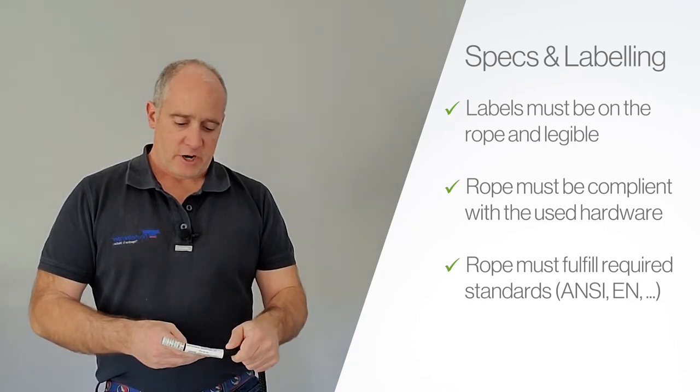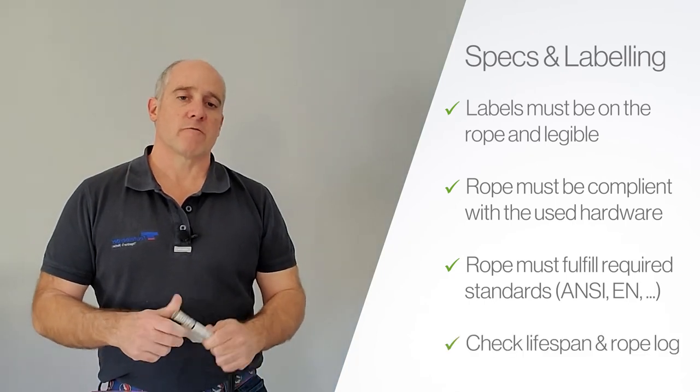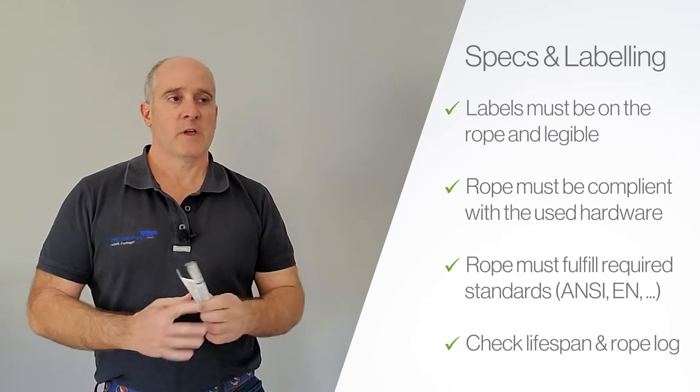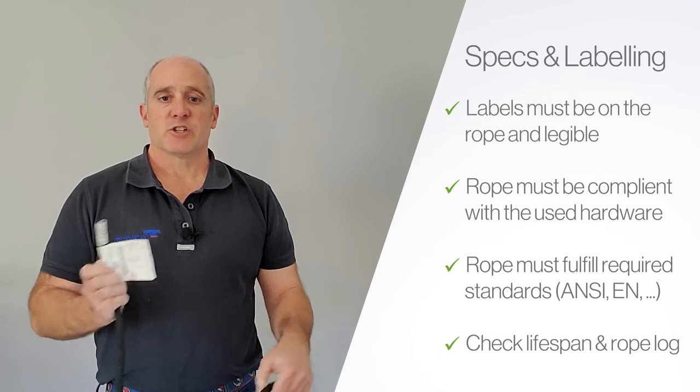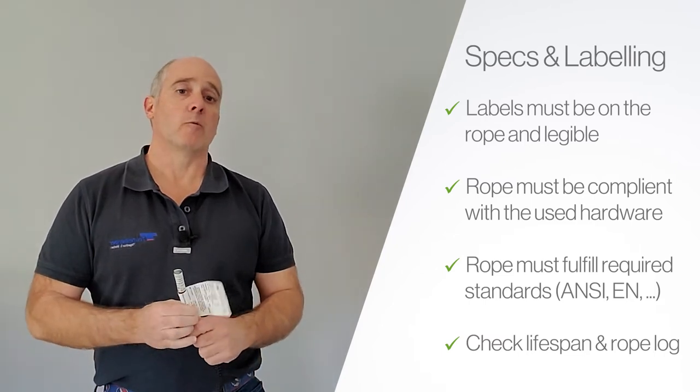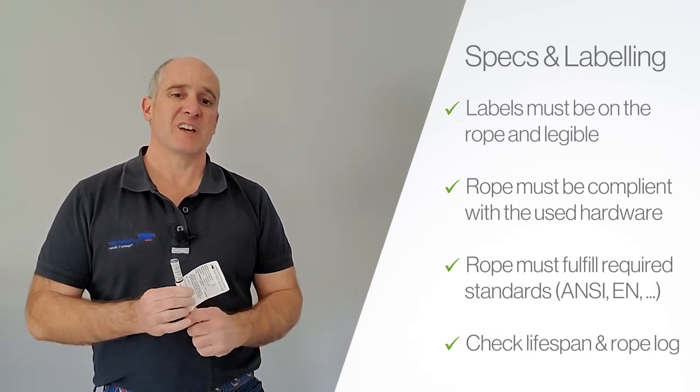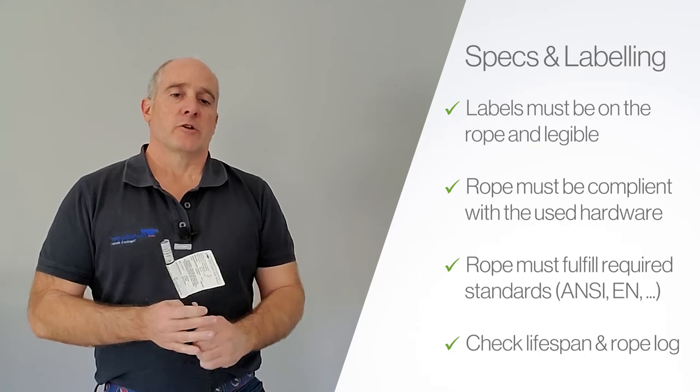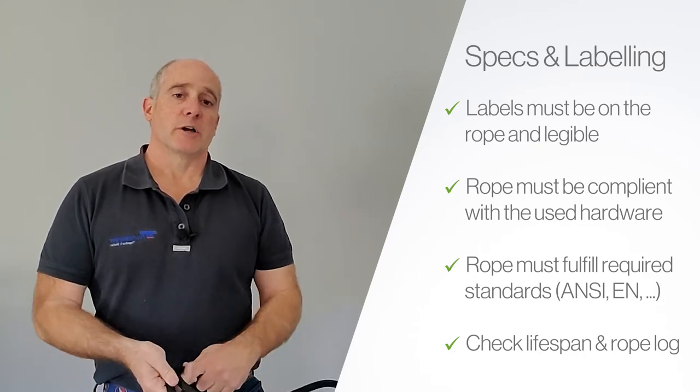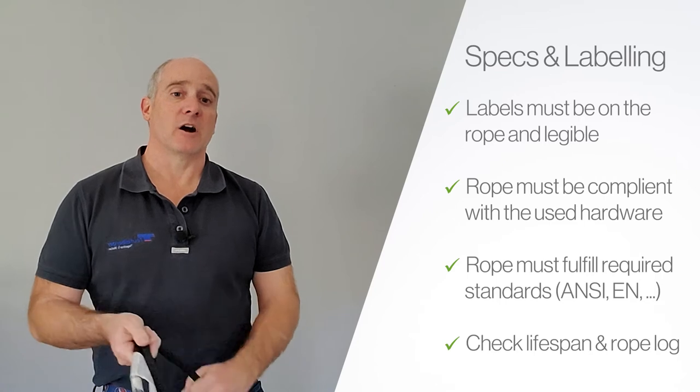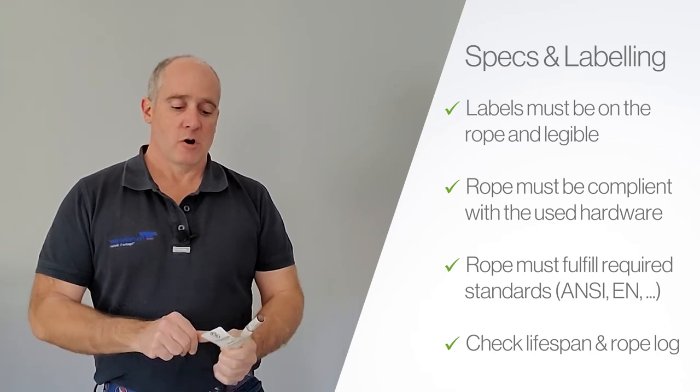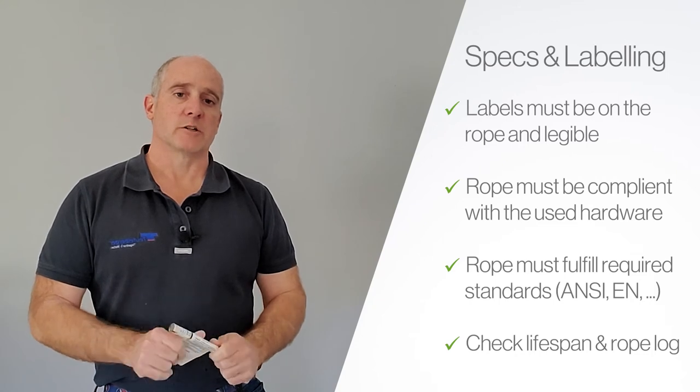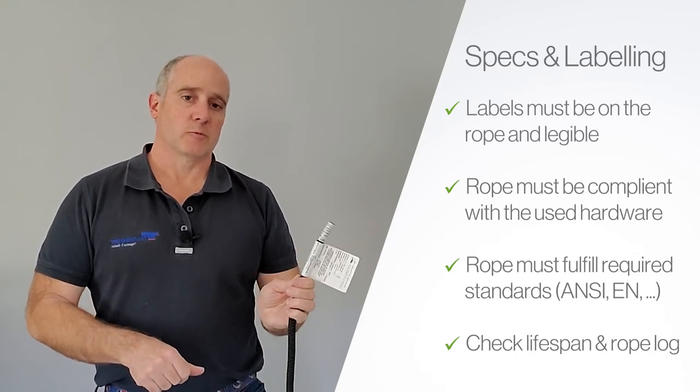The other thing that you want to check for is end of life. Make sure that rope still has useful life on it. Every manufacturer will have its own recommendations by rope on what the life expectancy of that rope is. You'll need to know that. You'll also need to check your rope log to make sure that rope hasn't met any hard conditions. So those are the first things you want to check for on your rope inspection. Let's go through that in a little more close up.